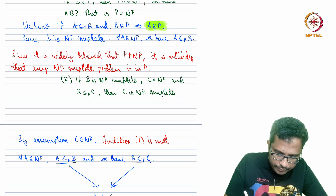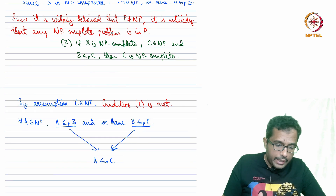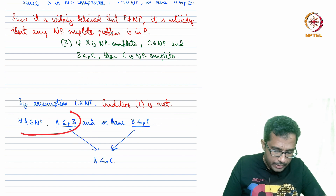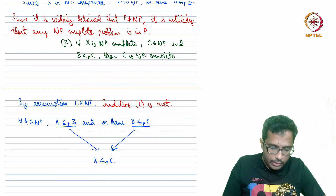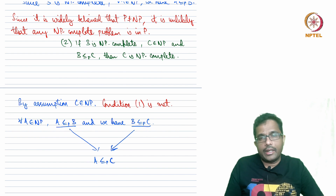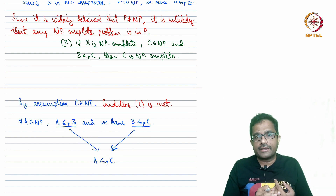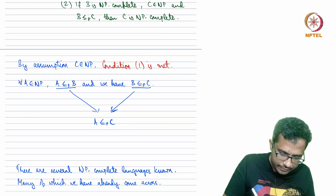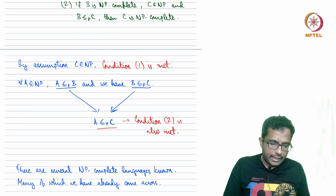Now we have to show condition two: for all A in NP, A reduces to C. By assumption B is NP-complete, so we know that for all A in NP, A reduces to B. This comes from B being NP-complete. And by assumption we have B reduces to C. So combining these two reductions — A reduces to B and B reduces to C — from last lecture we talked about the transitivity of reductions. If A reduces to B and B reduces to C, you can compose these reduction functions to obtain a reduction from A to C. This implies A reduces to C, so condition two is also met.